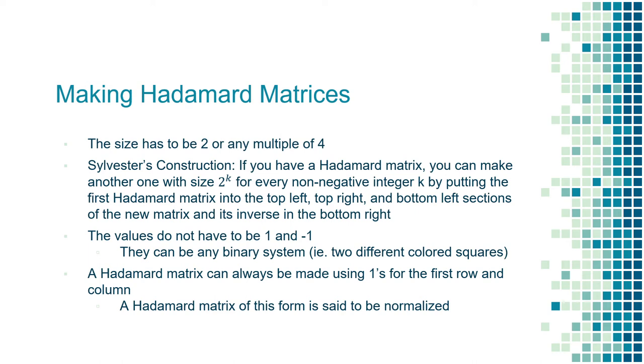I'll show an example of this in a second so that you can understand it better, but the last thing I want you to know about Hadamard matrices is that they don't have to comprise of 1s and negative 1s. They can be any binary system, such as using black and white squares, so long as they still follow the rules for making Hadamard matrices. I'll have some pictures of these Hadamard matrices for you to see later on so that makes more sense as well.